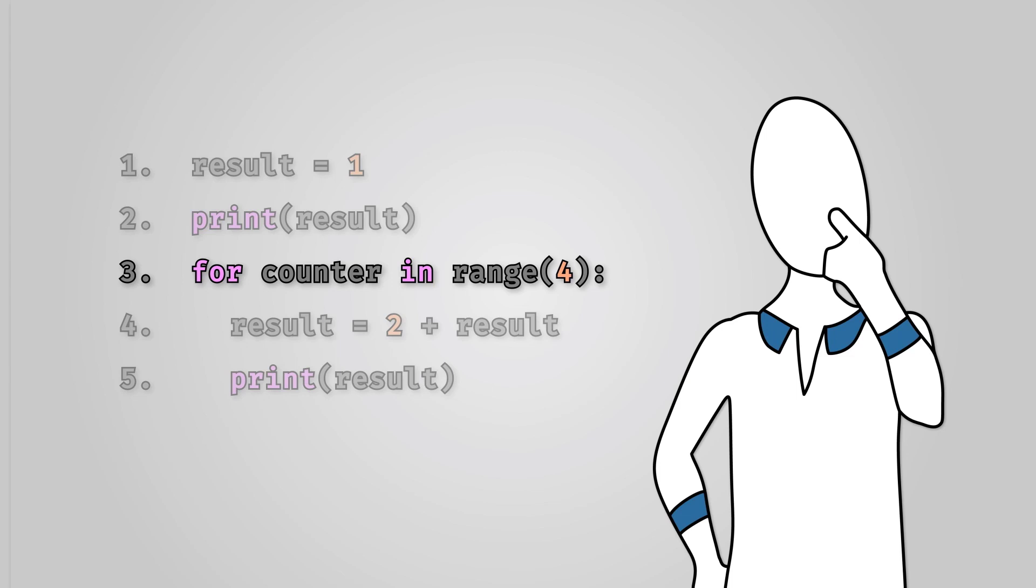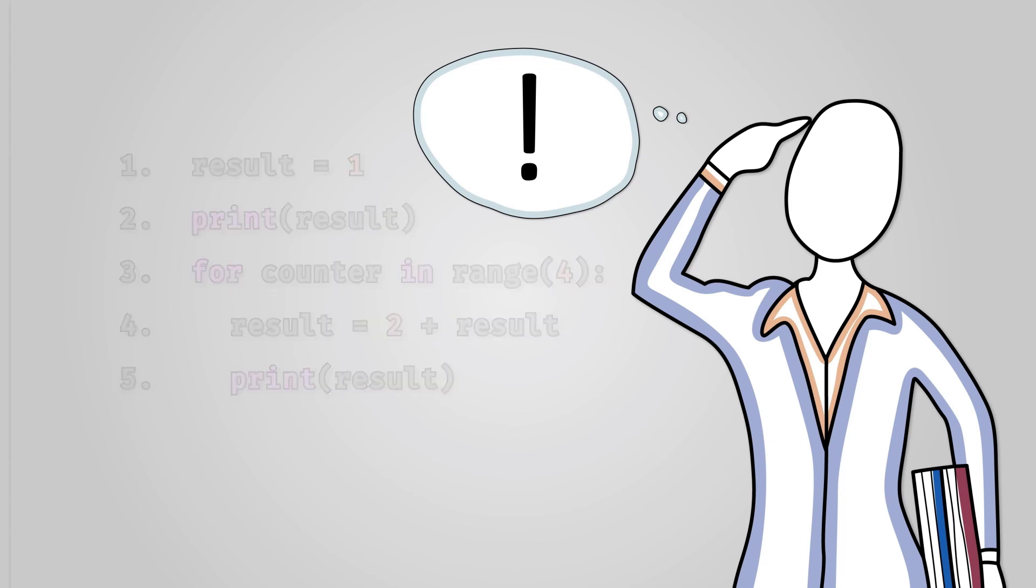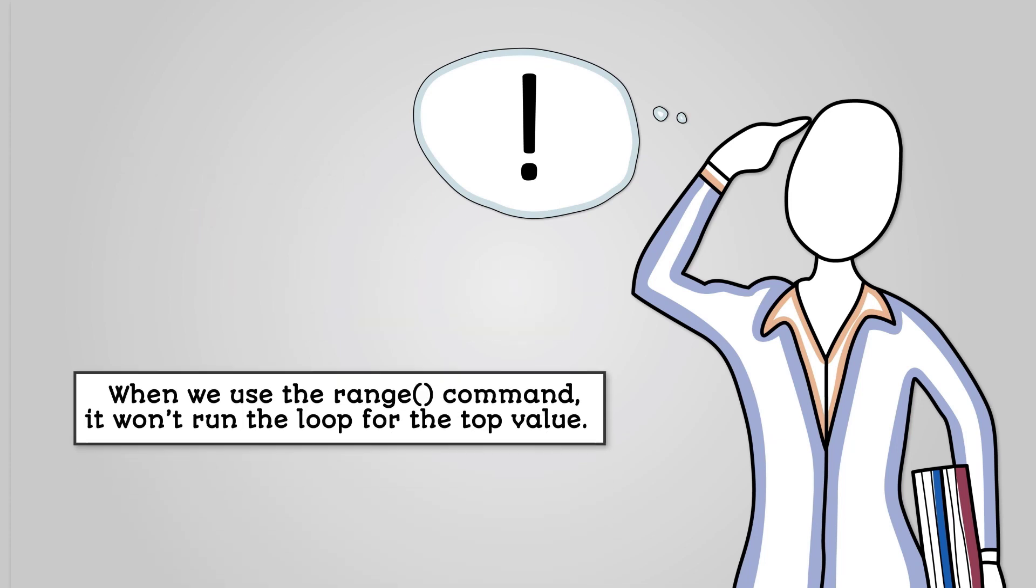This is a little different to AQA pseudocode. With AQA pseudocode it is inclusive of the top number so it would run when the counter is equal to 4. With Python when we use the range command it won't run the loop for the top value.